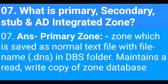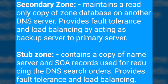What is a primary, secondary, stub, and AD integrated zone? Primary zone: a zone saved as a normal text file with the filename .dns in the DNS folder, maintaining a read-write copy of the zone database. Secondary zone: maintains a read-only copy of the zone database on another DNS server, providing fault tolerance and load balancing by acting as a backup to the primary server. Stub zone: contains a copy of the name server and SOA records, used for reducing DNS search order and providing fault tolerance and load balancing.